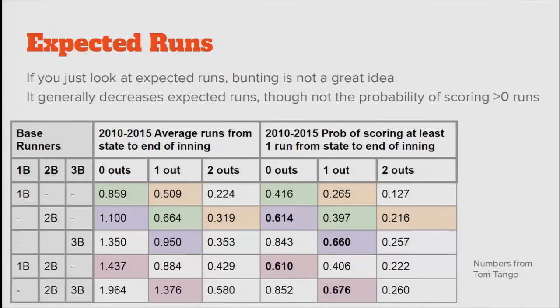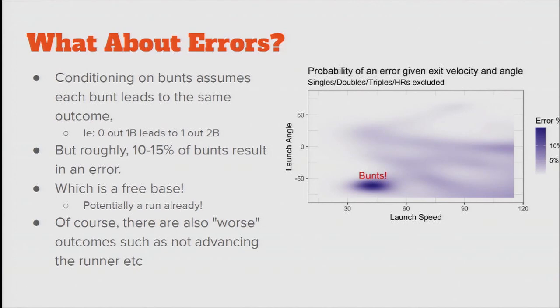The problem is that this scenario assumes a number of things. First, that all bunts are created equal. Second, that bunts will always lead to the batter getting out and the runners moving. But bunts also cause a lot of errors. We can identify where bunts are, and the probability of an error goes way up on bunts. If there's an error, you have a higher probability of getting a free base — the batter doesn't get out, and now you have a runner on first and second with no outs, which is great. But you might also accidentally hit into a double play, so a bunt could be way worse.